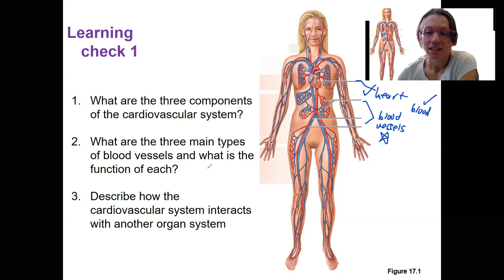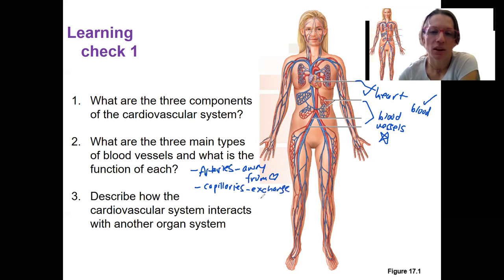Okay, second, three types of blood vessels and their function. We've got arteries. These go away from the heart. They're efferent vessels. We've got capillaries. These are exchange vessels. This is where exchange occurs with the body tissues, either the lungs or every other part of the body. Every part is going to have capillaries. And then veins. So this is going to go to the heart, carry blood back to the heart.